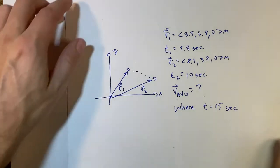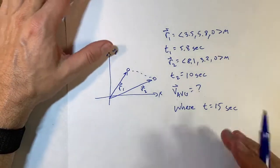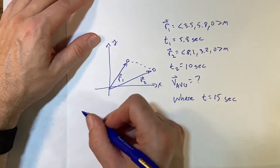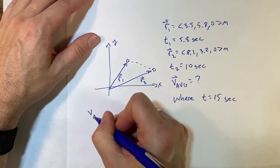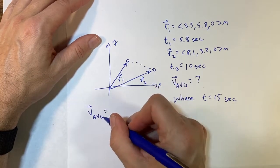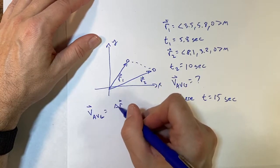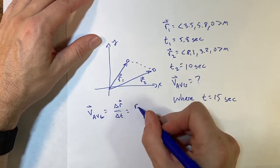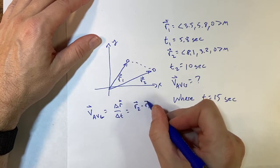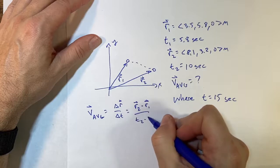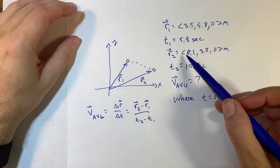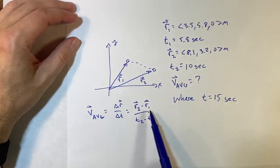You ready? Okay, so the first thing we're going to do is calculate the average velocity. So I know the definition of average velocity. The average velocity is delta r over delta t. So that's going to be equal to r2 minus r1 over t2 minus t1.